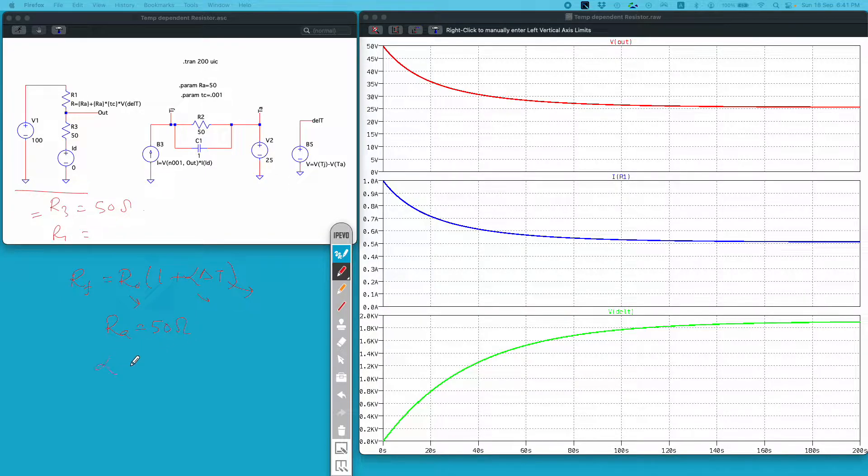Alpha I have defined as TC and its value I have used is 0.001. Usually value of temperature coefficient you can find in the data sheet of the resistor and it is defined as PPM per degree Celsius.